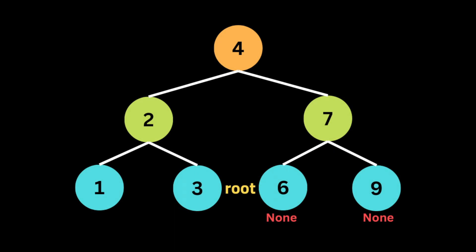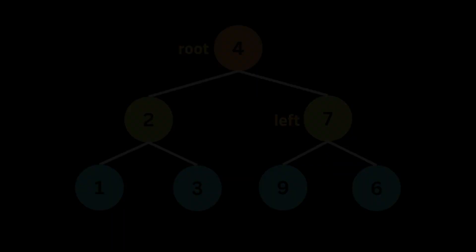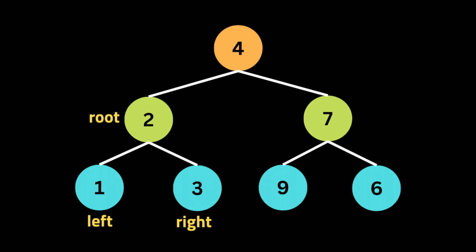Since node 9 has no children, we return none. Then we recursively call invert tree on the left child of root 9, which is 6 — that also returns none because there are no more nodes. We then return to the root of the right subtree, which is 7, and swap its left and right children (6 and 9). Then we go back to the first root (4), which called this function, and set the left child to be 7.